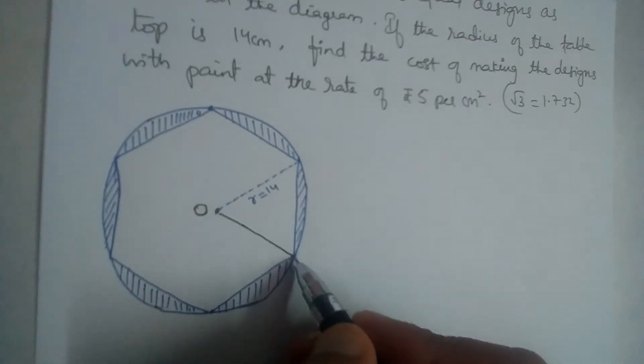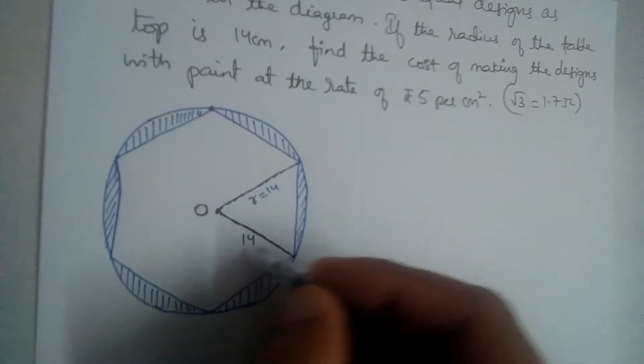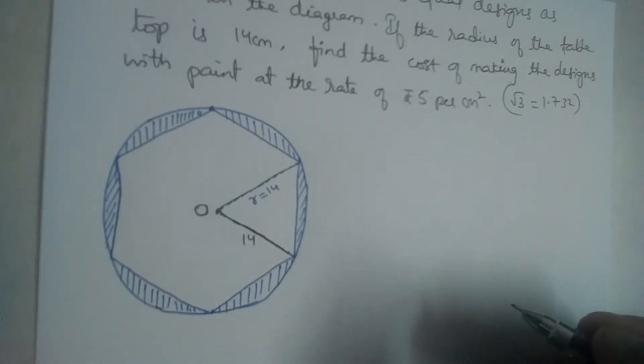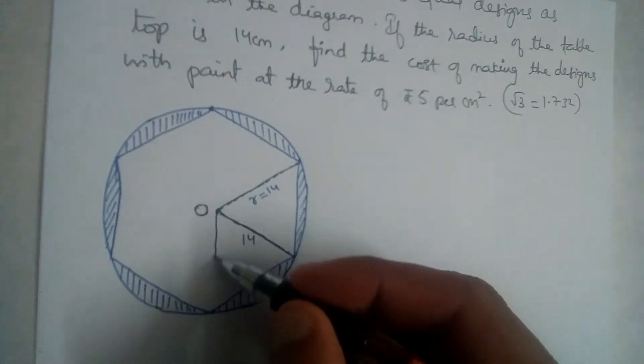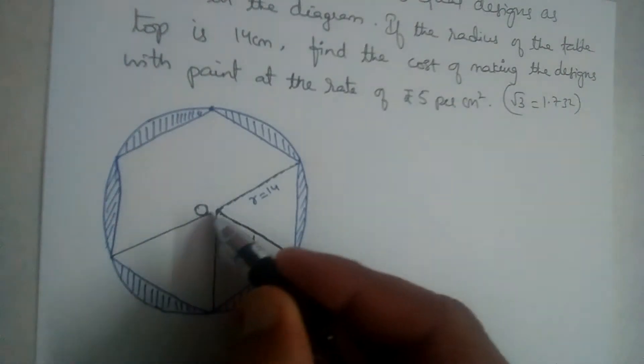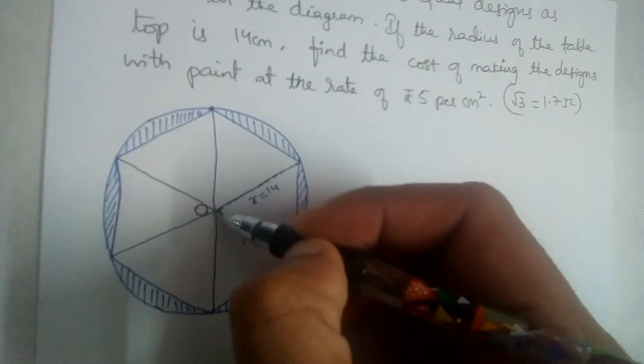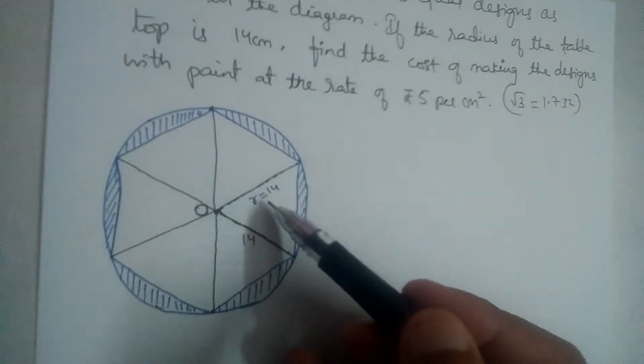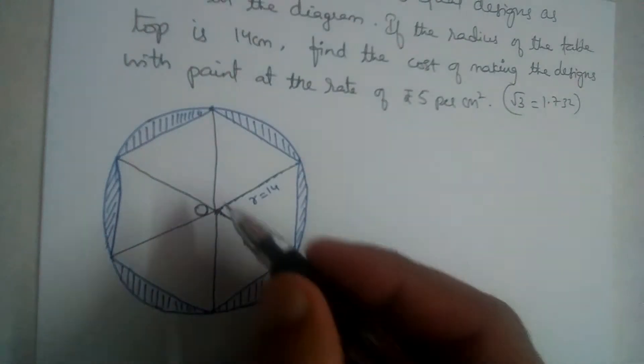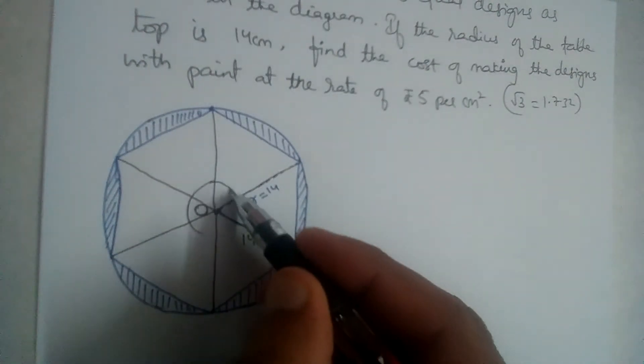So this is also 14. Now, like this, how many triangles can be found? Six equal triangles, right? One, two, three, four, five, six. Six equal triangles. So this complete thing is 360 degrees.